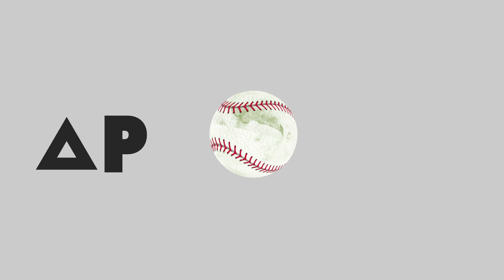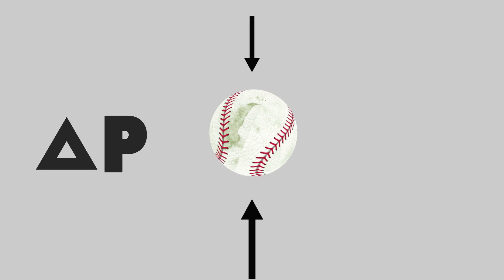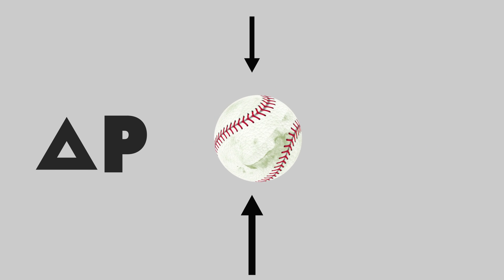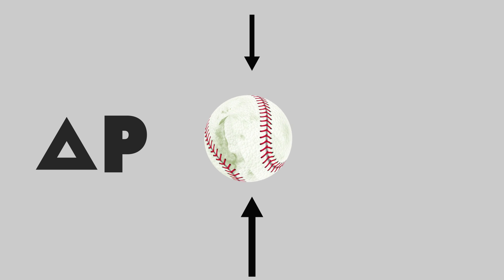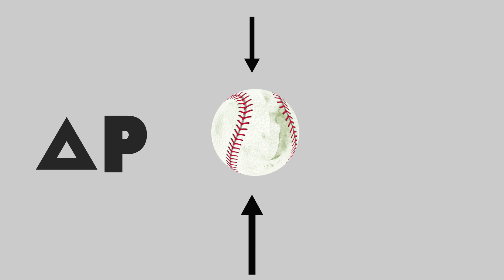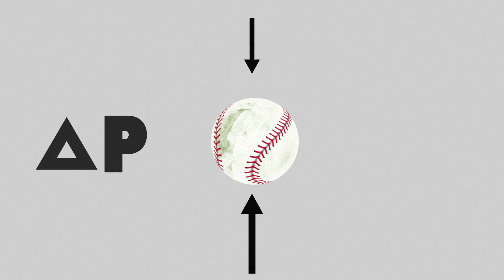This is where the spin of the ball comes into play. One side of the ball is spinning in the direction the air is moving and the other is spinning against it. This causes the air around the ball to have different velocities. Bernoulli's equation simply shows that a fluid — in this case air — that has a slower velocity also has a higher pressure, and a fluid with a higher velocity has a lower pressure. This causes the ball to have a pressure differential between the top and bottom.